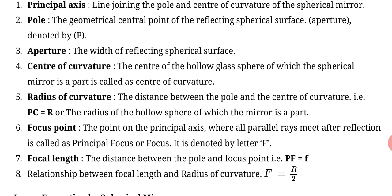Point seven, focal length: the distance between the pole and focus point. The distance between pole and focus point is denoted as small f, focal length.